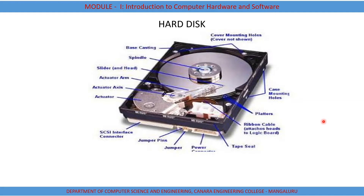Next we will see the commonly used secondary storage device — the hard disk. A hard disk is basically a set of disks stacked together, which looks like phonograph records. A single hard disk includes several platters, generally called disks, that are covered with some magnetic material. Each disk requires two read-write heads, one for each side, meaning data is recorded on both sides.